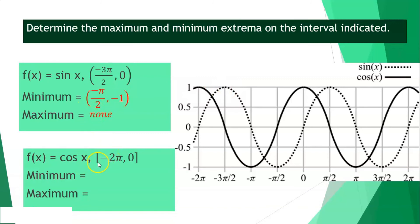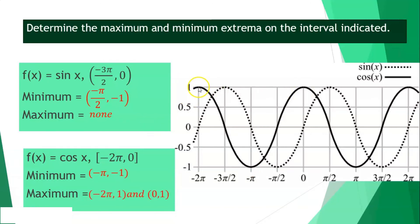For cosine x, the interval goes from negative 2 pi until 0. Our minimum point is located at negative pi, negative 1. The maximum points are located at negative 2 pi, 1 and 0, 1. For the second given, it is a bracket, so the endpoints are included. Parenthesis and bracket will make a difference.